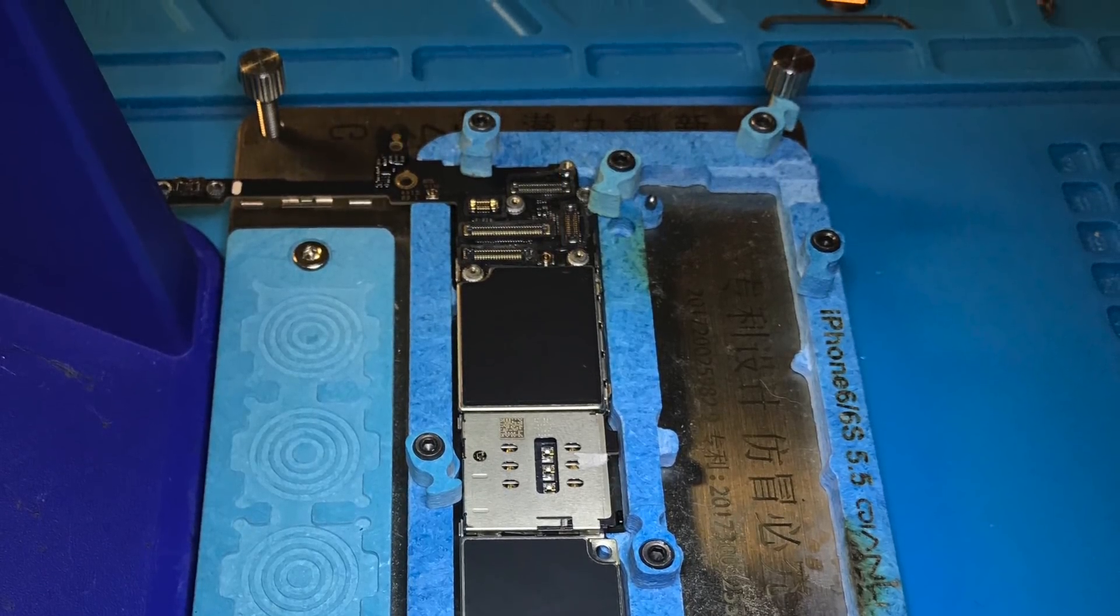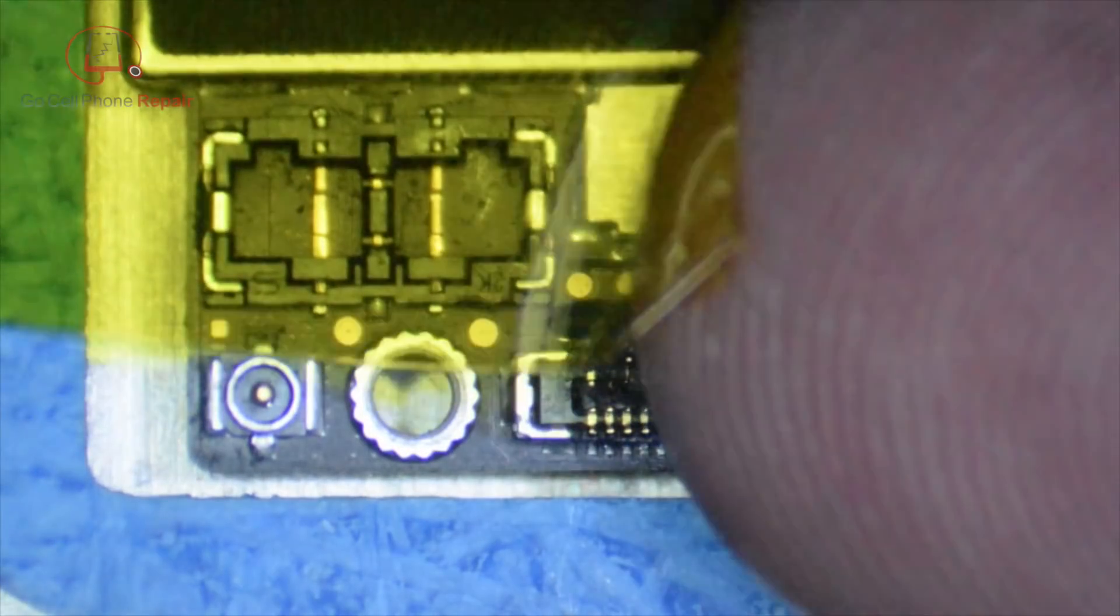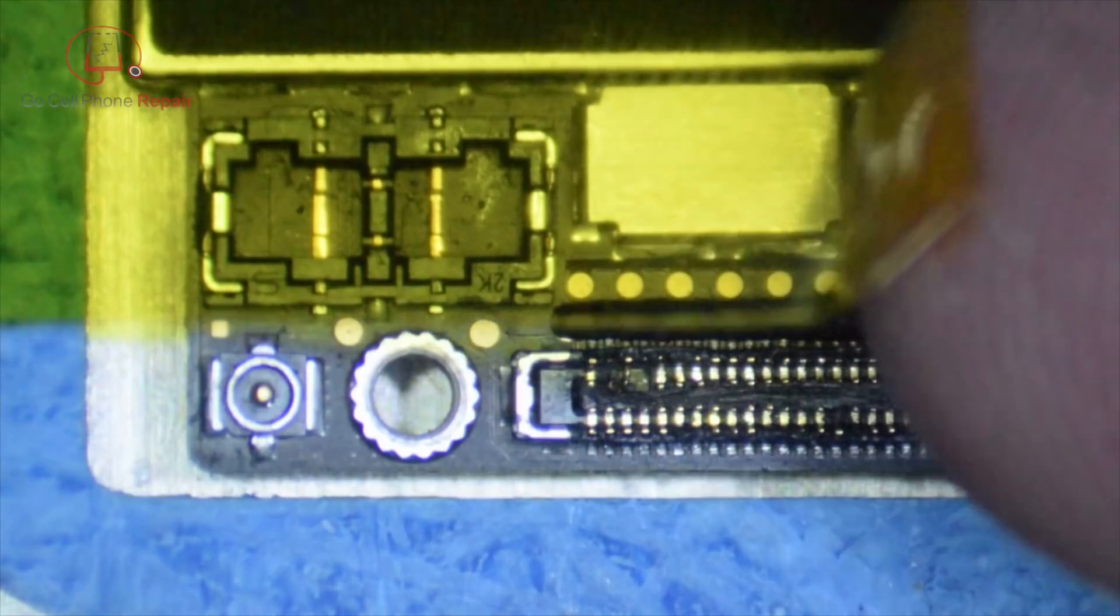All right, let's get it started. First thing I'm going to do is lay some Kapton tape down over the battery connector.